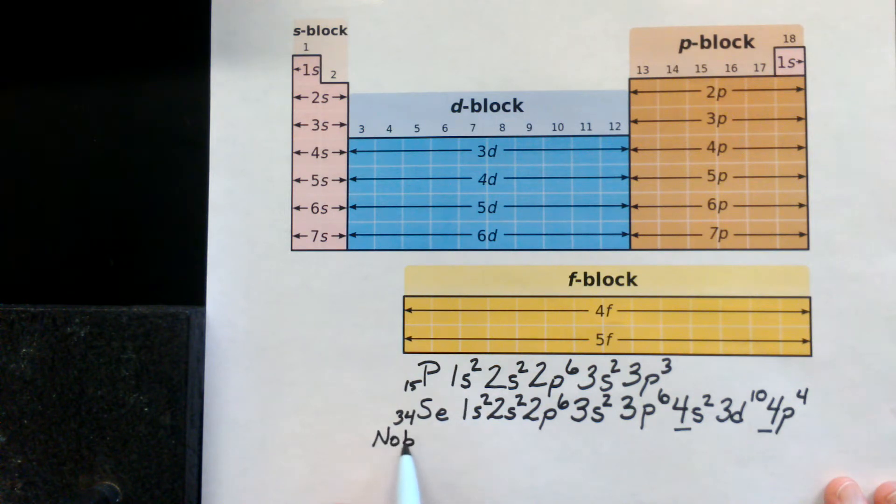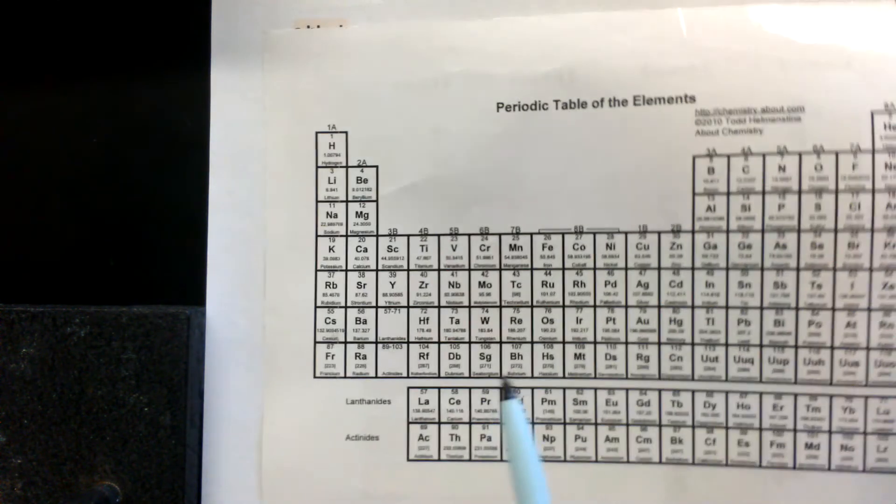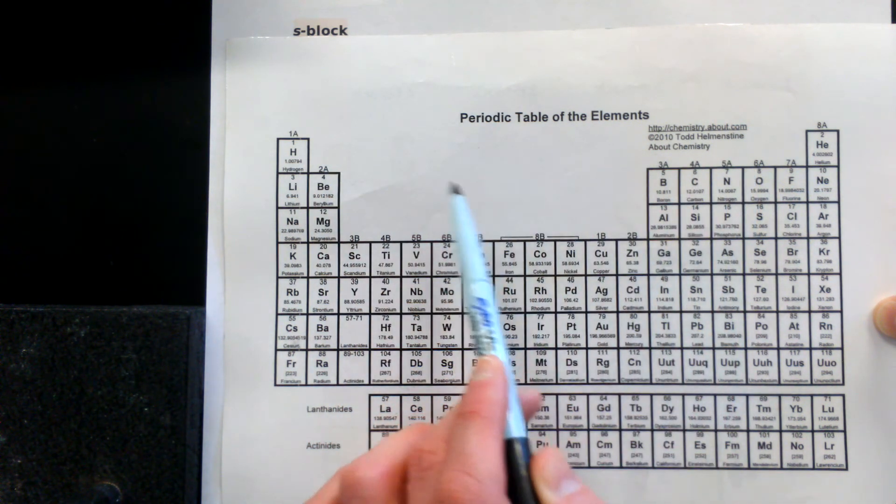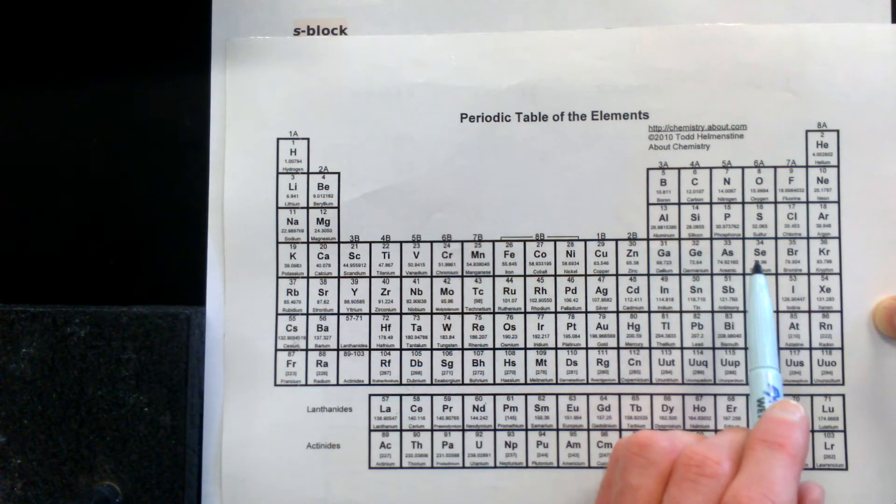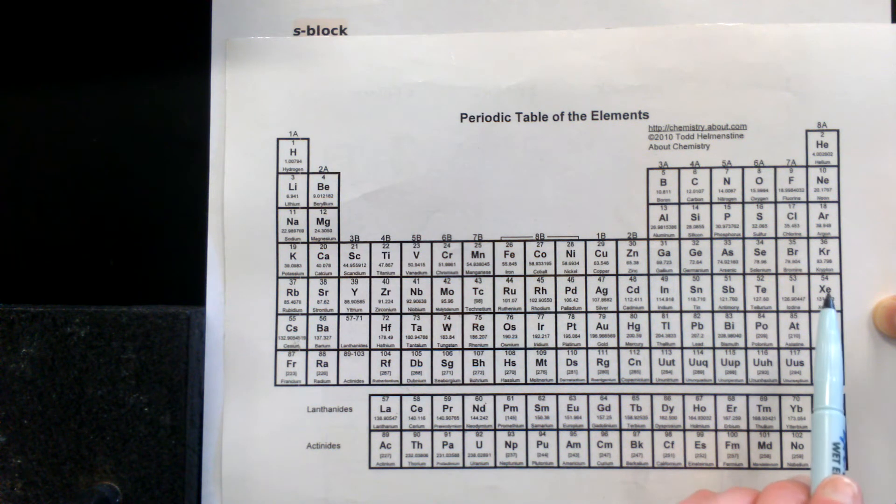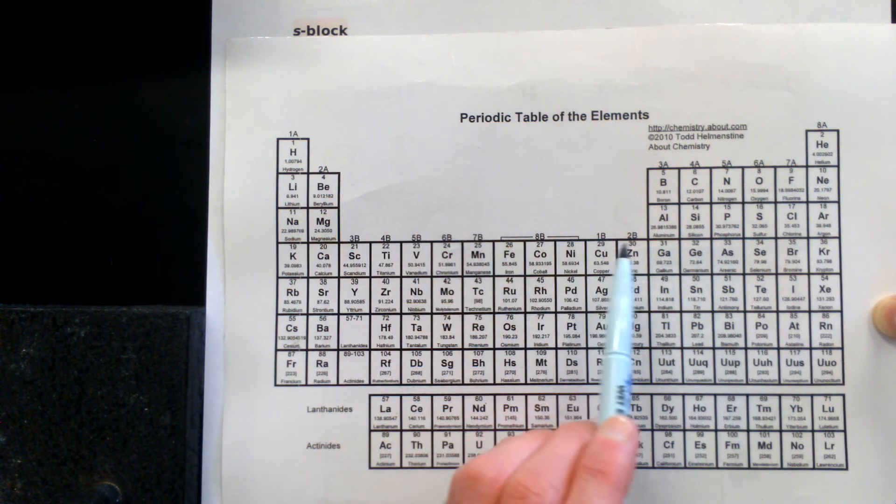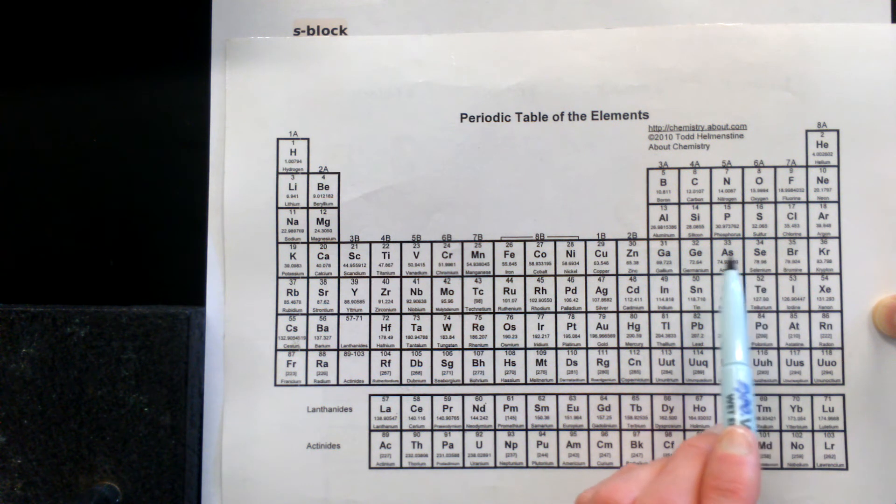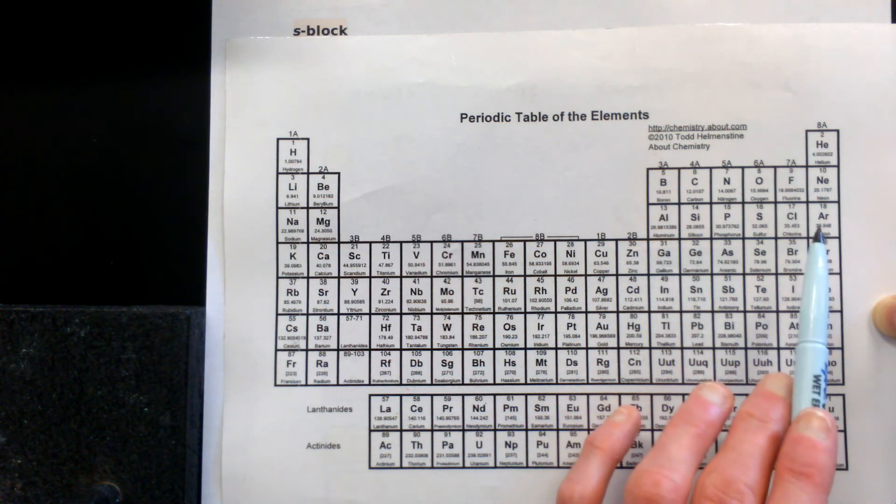We can use what we call Noble Gas Configuration. Alright, what Noble Gas Configuration is, it's choosing an element. So let's go back to the selenium, number 34 on the periodic table. And instead of showing the complete configuration starting all the way back and doing the 1s, 2s, 2p and so forth, we shortcut it with the nearest Noble Gas. Now Noble Gases are those in this far right group 18 or group 8a column. They have completely filled orbitals, because we've come all the way across the periodic table, so all of the s, the p and the d orbitals are filled up. So for selenium, we could backtrack to argon and start there and show the configuration.